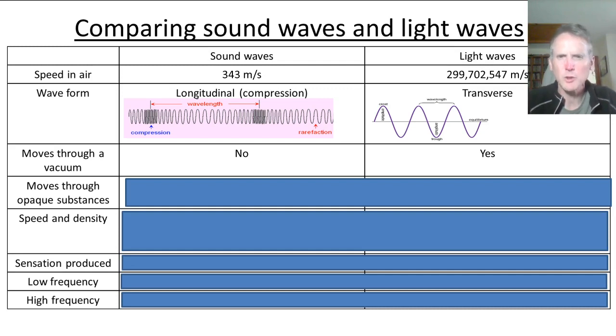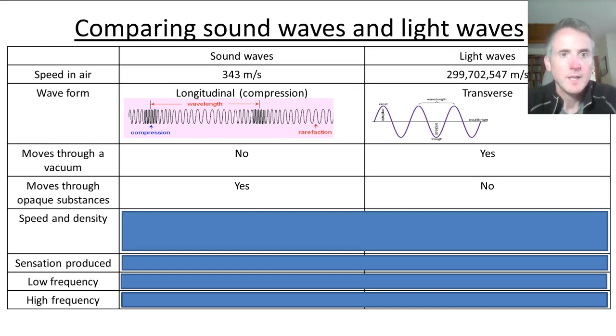Moves through opaque substances. What's an opaque substance? This is an opaque substance. Light cannot pass through. So by definition, light cannot pass through. But can sound travel through this? Yes, really loud. So sound waves can travel through opaque substances. And they can travel through transparent substances as well. But light rays can only travel through transparent substances.